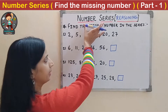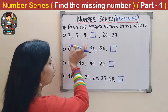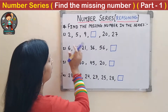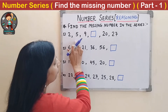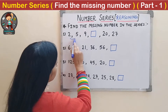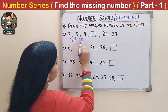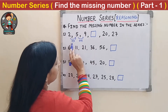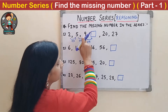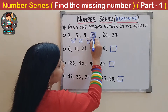Now we will solve some questions. In all these number series, one number is missing and we have to find it by checking the pattern. First question: 2, 5, 9, _, 20, 27. The numbers are increasing. Here 3 is added to 2 to get 5, then 4 is added to get 9. So the next difference is 5. We add 5 to 9 to get the missing number: 9 + 5 = 14.